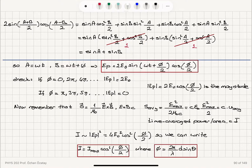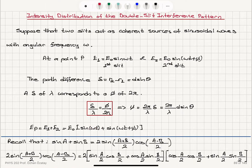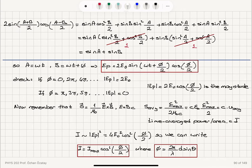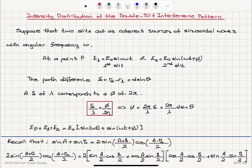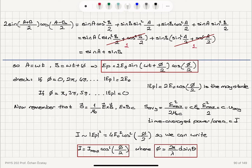Here, A is ωt and B is ωt + φ. Applying this trigonometric identity to E0 sin(ωt) + E0 sin(ωt + φ), we obtain 2E0 sin(ωt + φ/2) cos(φ/2). This is the total electric field at point P, and as we can see, it depends on the phase difference φ.